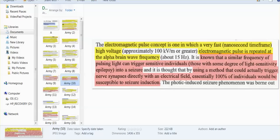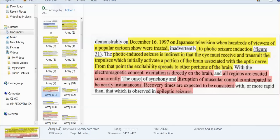Electromagnetic pulse concept is one in which very fast nanosecond time frame high voltage electromagnetic pulse, you repeat it at the alpha brain wave frequency. It is known that a similar frequency of pulsating light can trigger sensitive individuals into a seizure. Well with their method they can produce these seizures in 100% of individuals. Everyone is susceptible. Not only humans, dogs, cats, all animals.